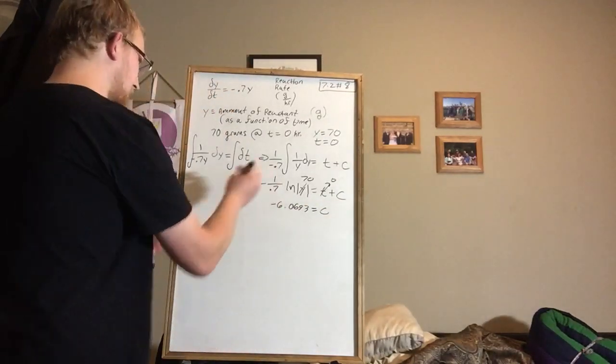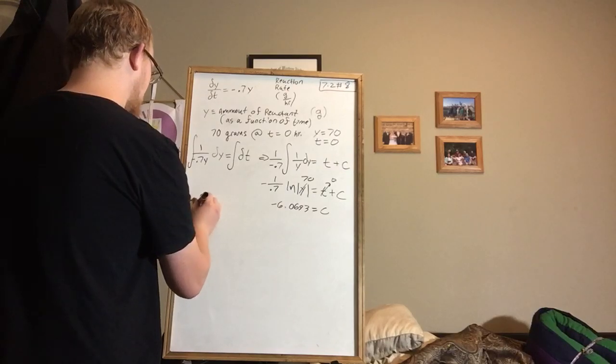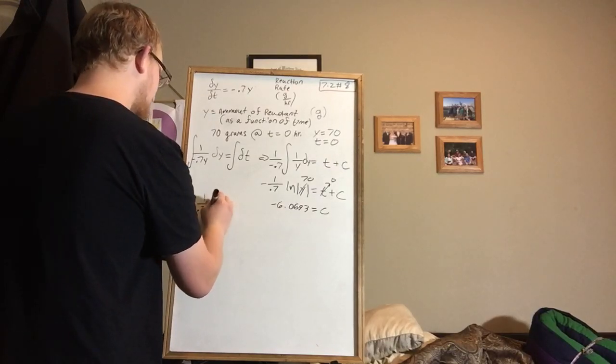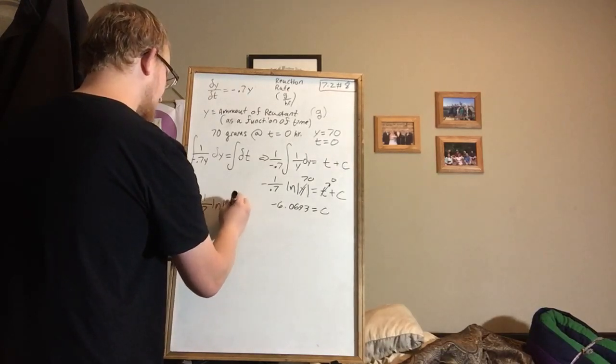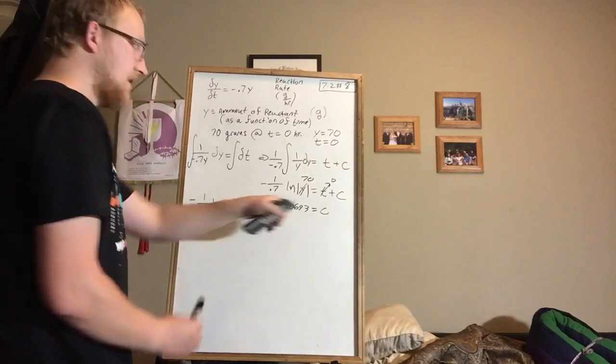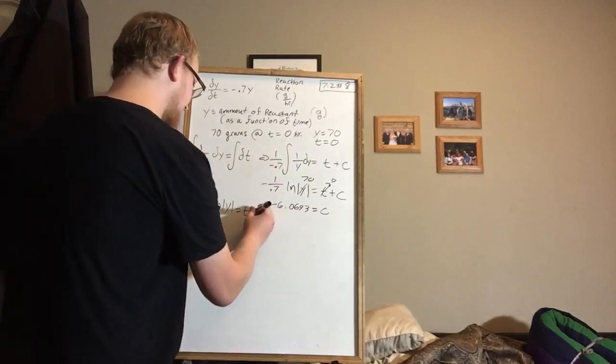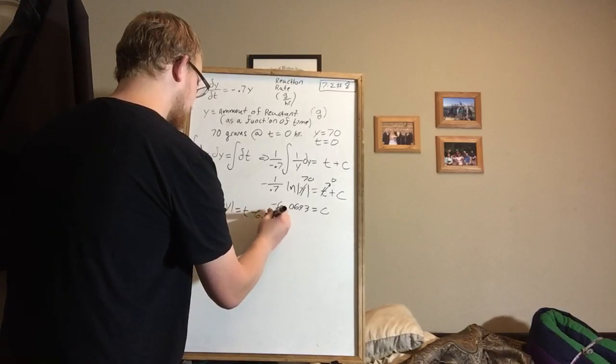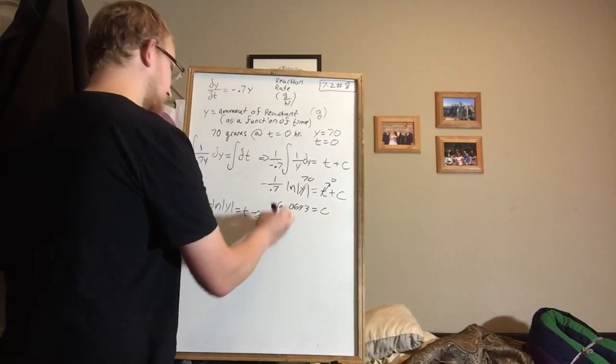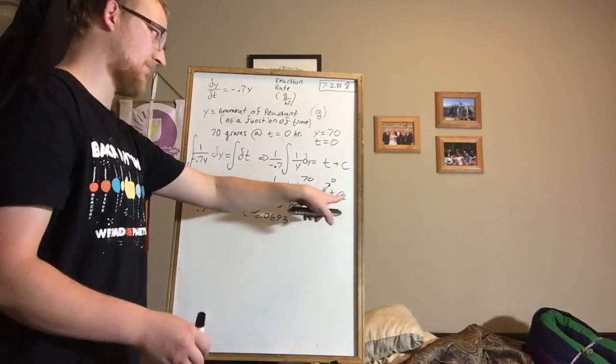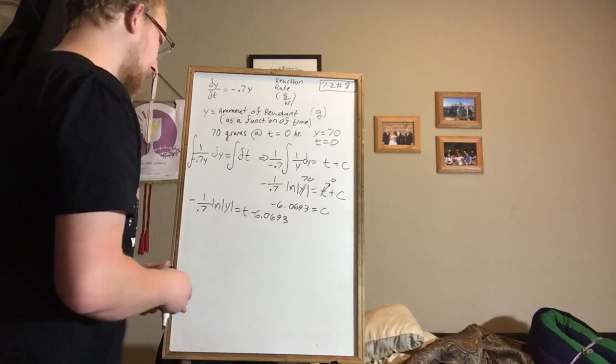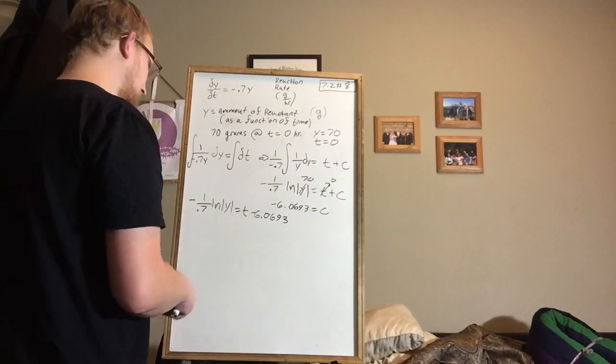So now we can rewrite this equation as minus 1 over 0.7 Ln of the absolute value of y equals t, but plus c is now minus 6.0693. So we solve for c and we plug it back into our general differential equation.